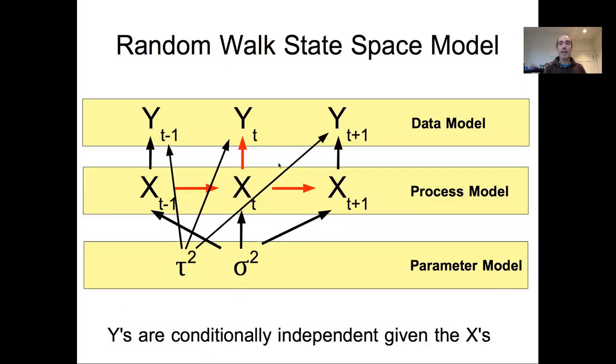As a reminder, this is the graph of the state-space model, showing how the latent state X is informed by three parts: the previous state of the system, the dynamic model that predicts the current state, the future state of the system which is constrained by the dynamic connection, and the observations at that point in time.